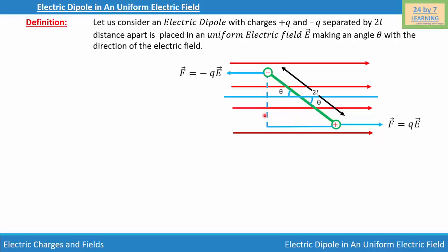Looking at this right triangle with angle theta, let this perpendicular distance be r. We can write sin θ = r / 2l, since sine is perpendicular over hypotenuse, with r as the perpendicular and 2l as the hypotenuse. Simplifying, we get r = 2l sin θ.